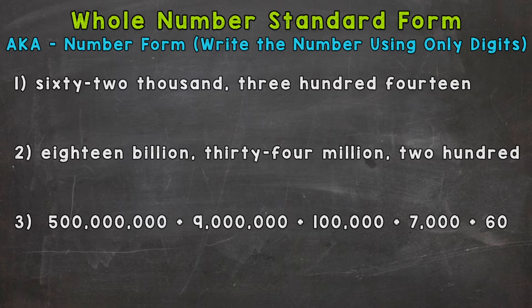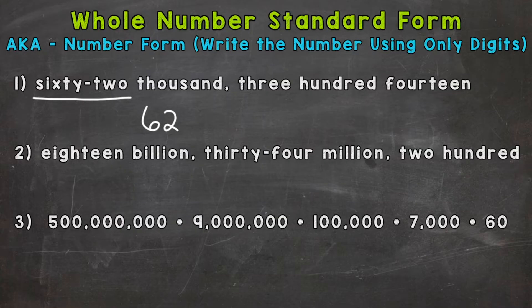Let's jump into number one, where we have 62,314. We're going to take our time, break this word form down, and make sure we properly convert it to standard form. We'll start with the 62 here and write it out. We know it's going to be in the thousands period, so that 62 has to have a value of 62,000.